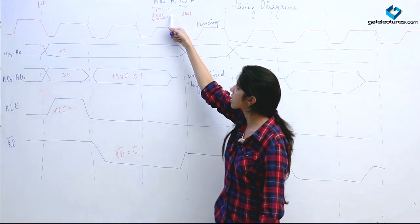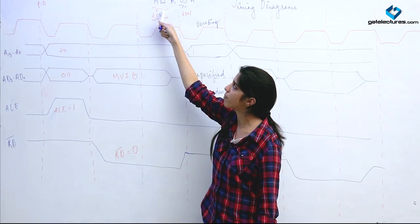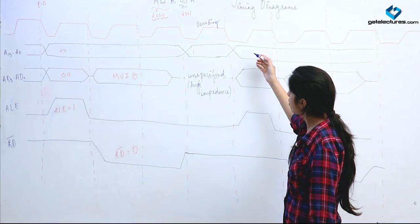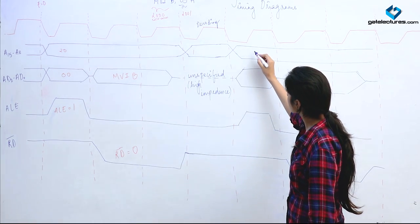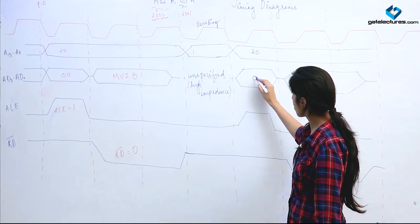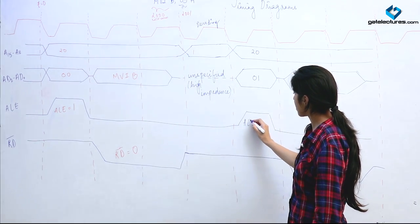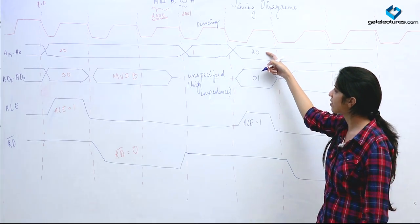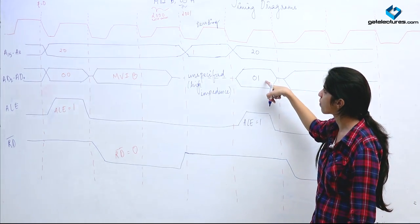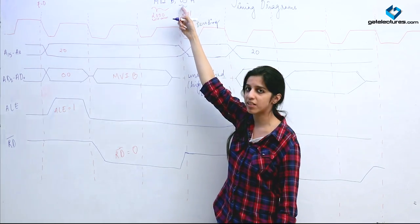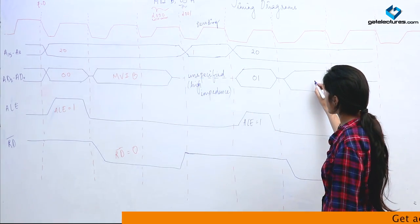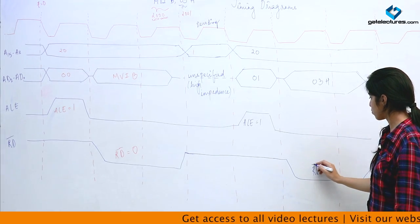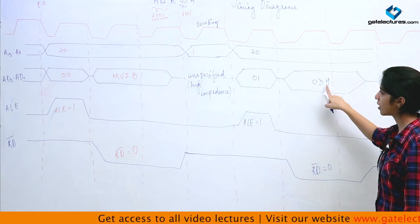When we are done with memory location 2000H, we move on to the next location, 2001H. We put 20H in the higher address lines and 01H in the lower lines, and make ALE 1 so this bus acts as an address bus, reaching address 2001H. At 2001H, the data 03H is stored, so we get 03H on the bus. We make read bar 0 so that we can read this data.